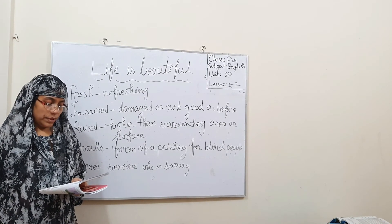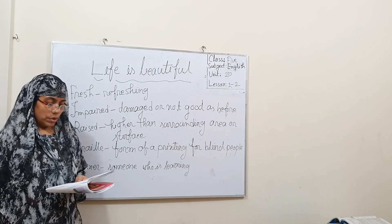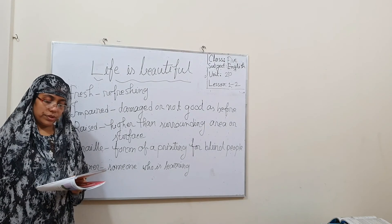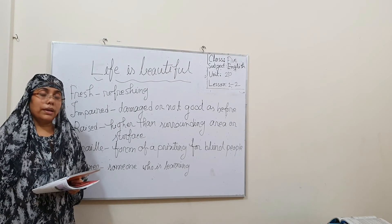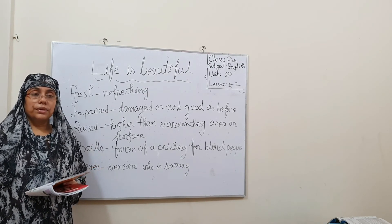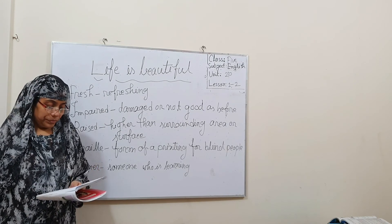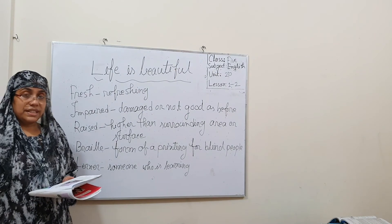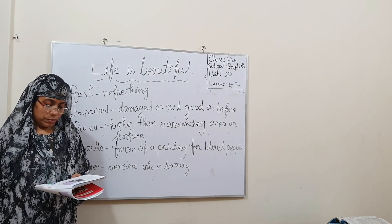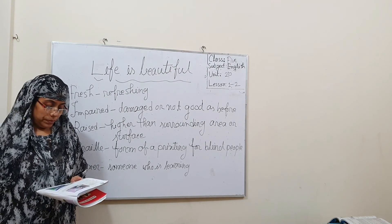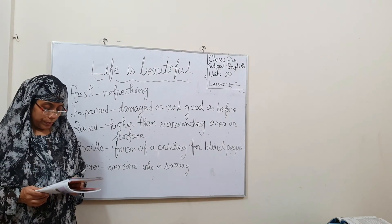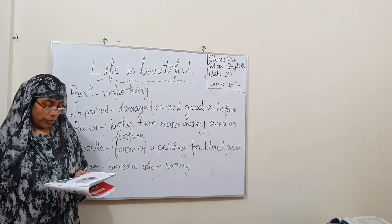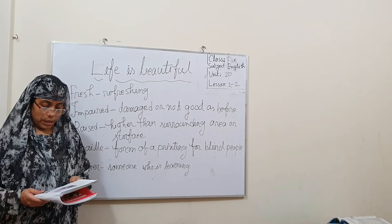What does Maria like? Maria likes to be with her friends. Can Maria see the beautiful spring day? No, Maria cannot see the spring day. Why cannot she see? She cannot see because she is visually impaired — her eyes don't work. When has she been unable to see? Since she was born, she was unable to see anything.